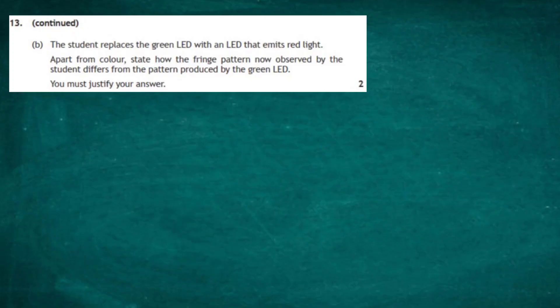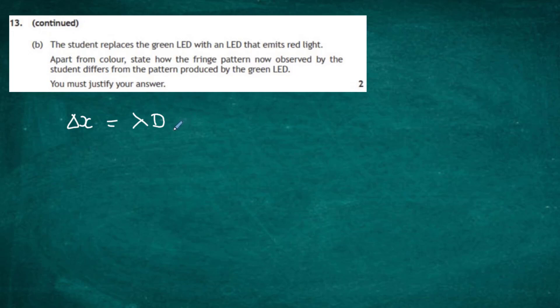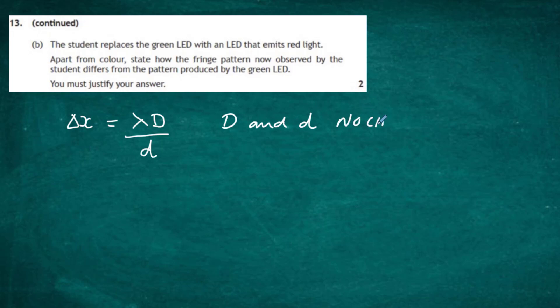Question 13 continued, Part B: the student replaces the green LED with one that emits red light. Apart from colour, state how the fringe pattern differs from the pattern produced by the green LED, and justify your answer for two marks. We go back to our equation: delta x equals lambda times capital D divided by small d. Capital D is the distance between the slits and screen.